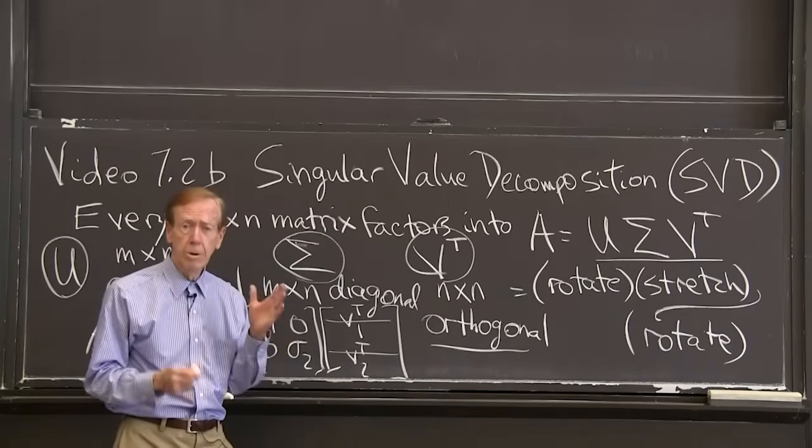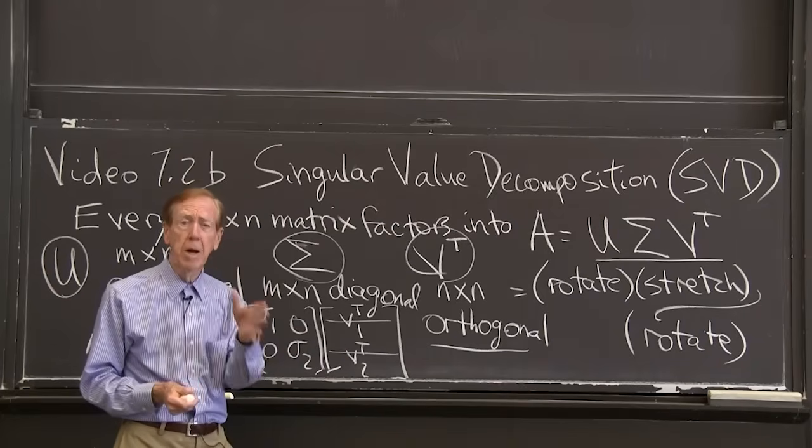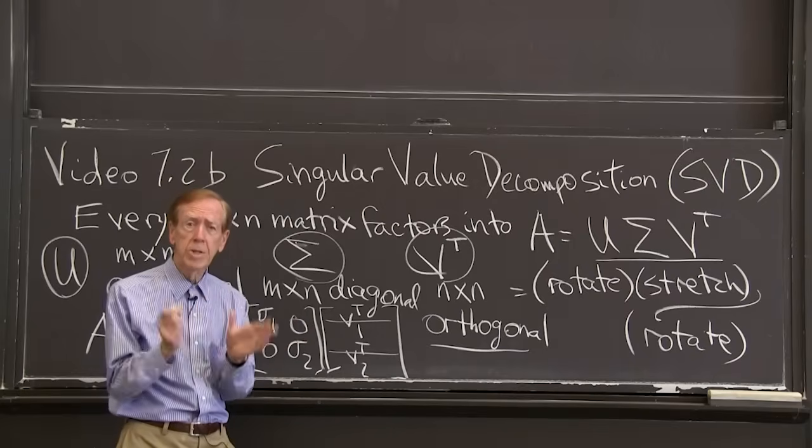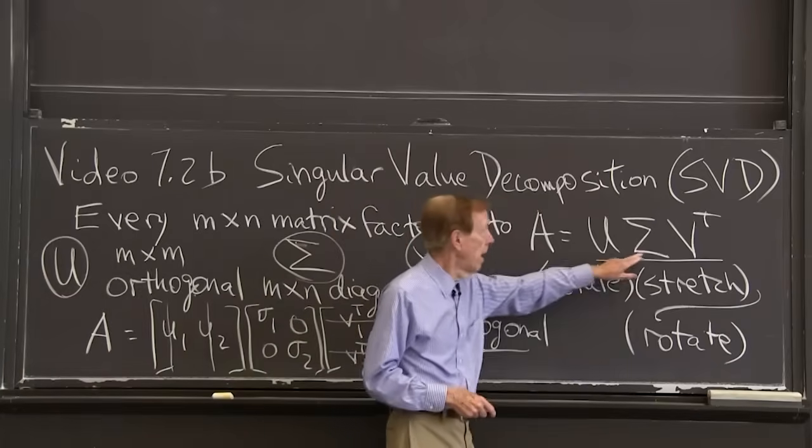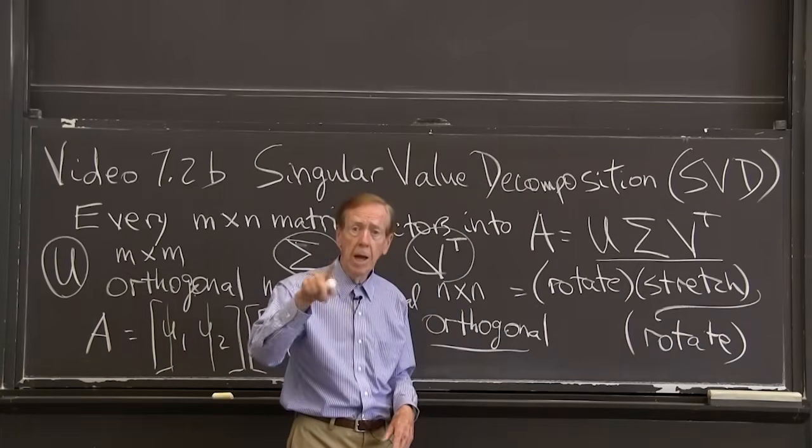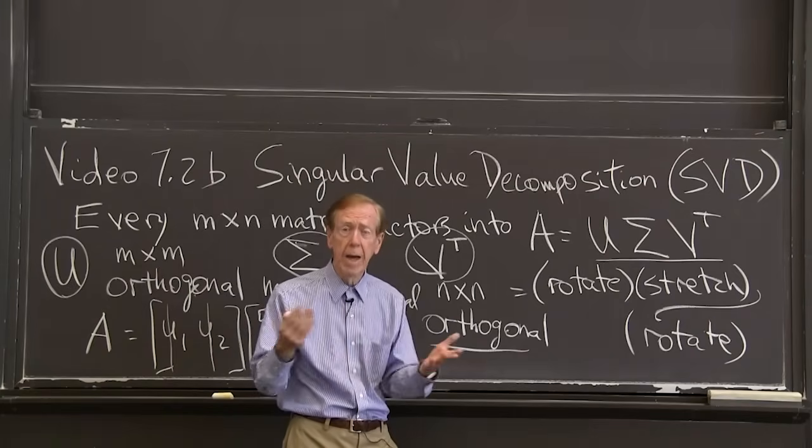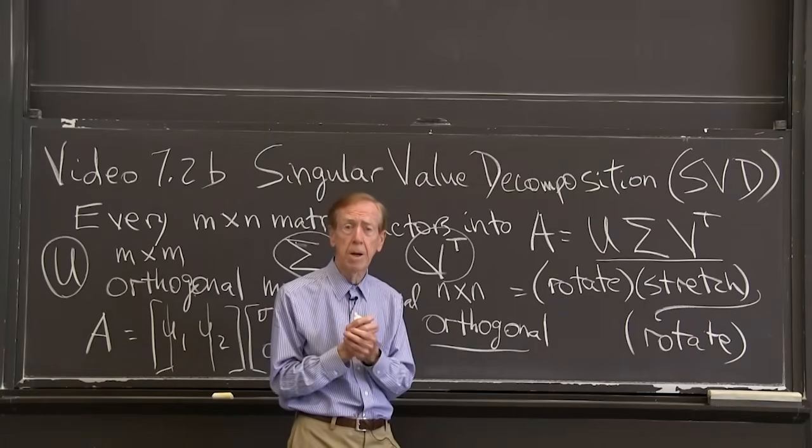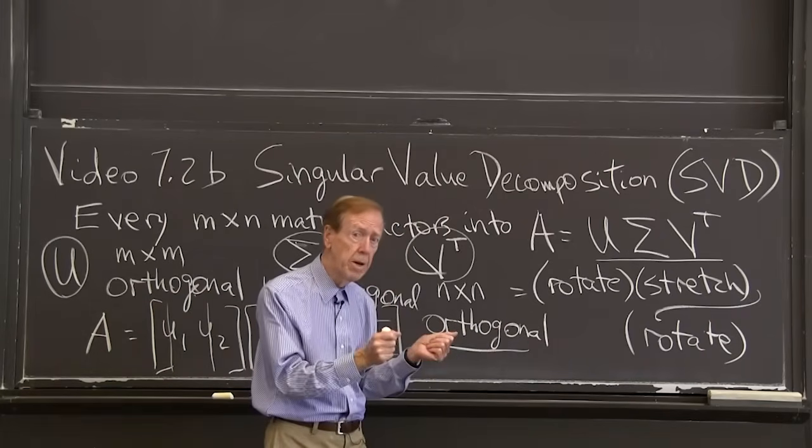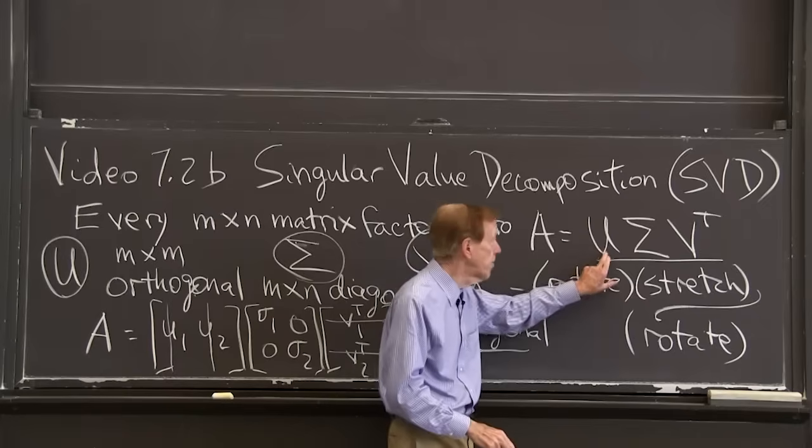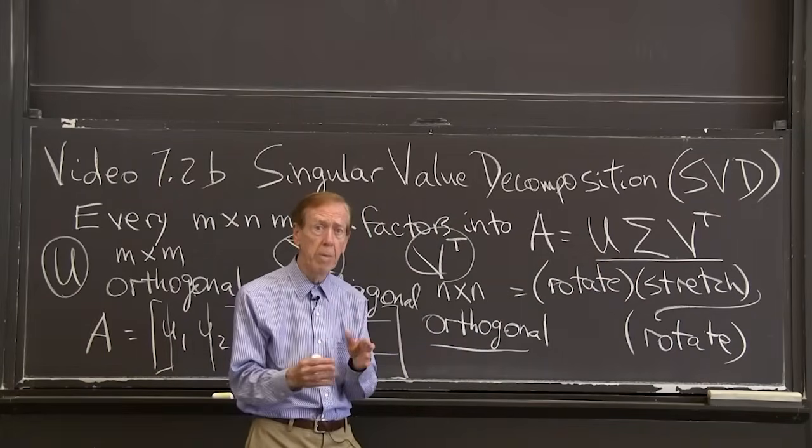We have seen three factors for a matrix: V, lambda, V inverse. What's the difference? What's the difference between this SVD and the V lambda V inverse? V lambda V inverse is for diagonalizing matrices. So the lambda is diagonal and the sigma is diagonal, but they're different. The key point is I now have two different matrices, not just V and V inverse.